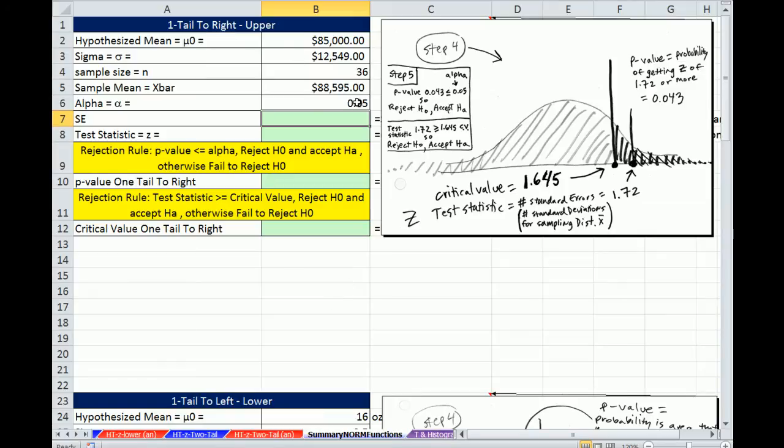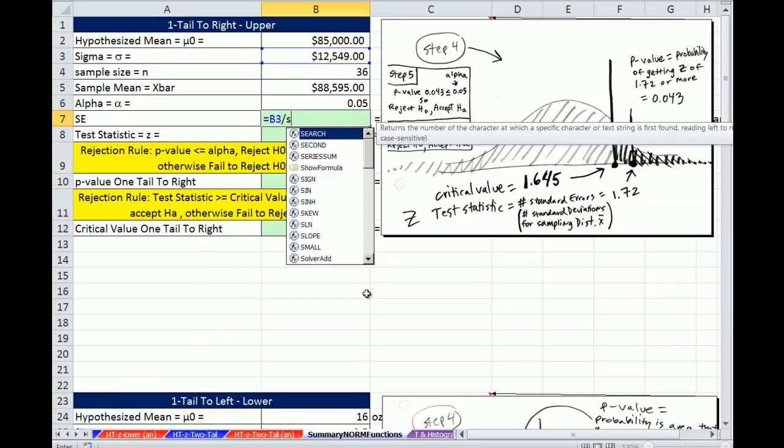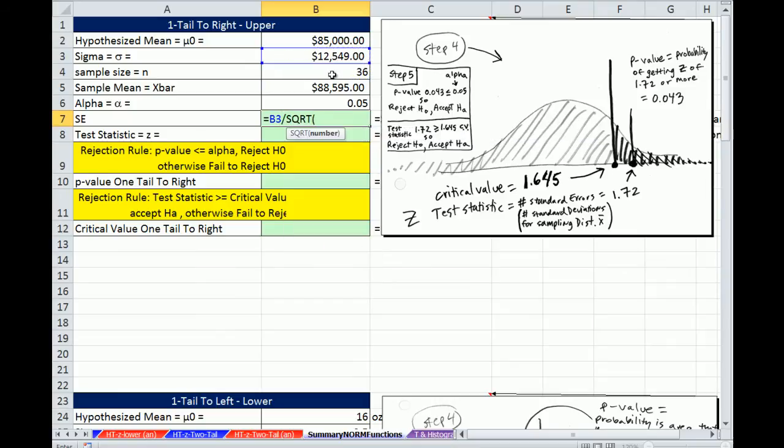One tail to the right upper test. That means we're testing on the upper end. We have all of our data here. We have to calculate standard error before we can do the test statistic. Standard error is always going to be when sigma is known, sigma divided by square root of n.